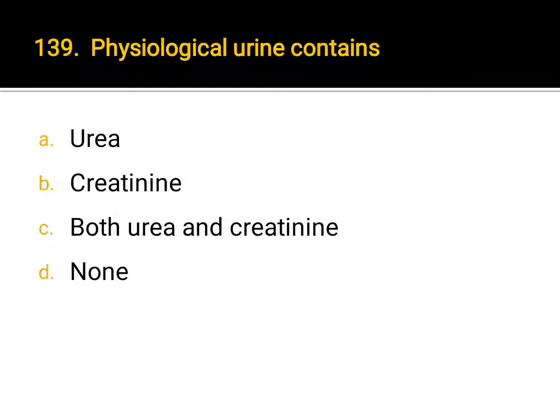Physiological urine contains: A. urea, B. creatinine, C. both urea and creatinine, D. none. Correct answer: C. Both urea and creatinine.